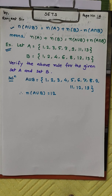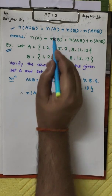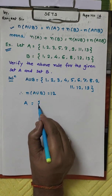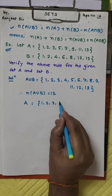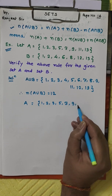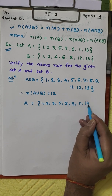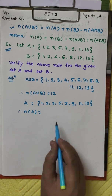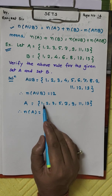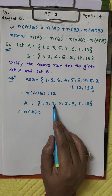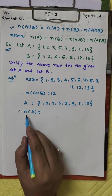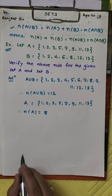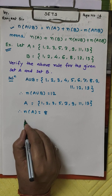Similarly, we find n(A). Set A = {1, 2, 3, 5, 7, 9, 11, 13}. Counting: 1, 2, 3, 4, 5, 6, 7, 8 — so n(A) = 8.